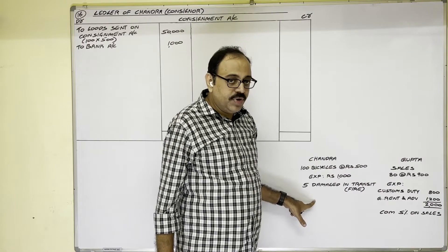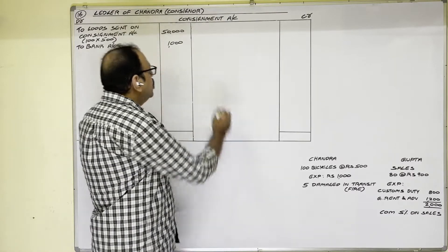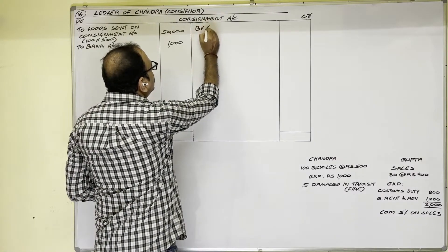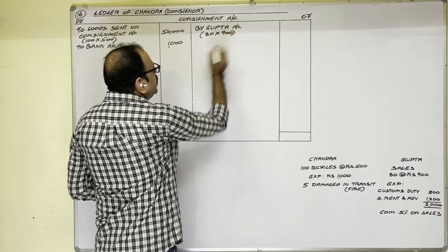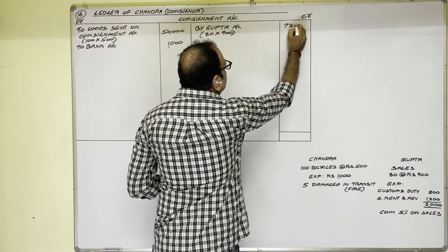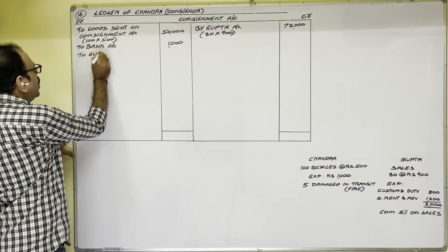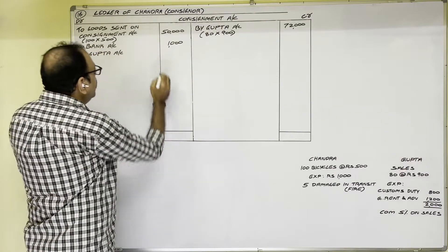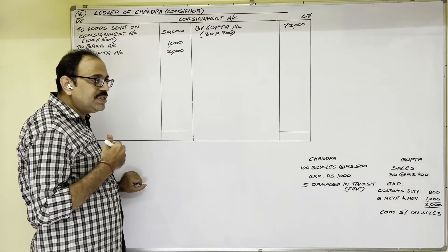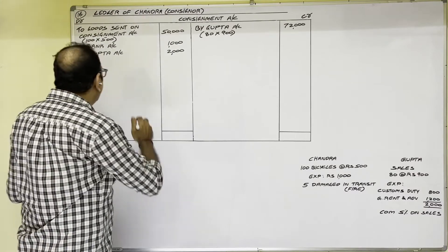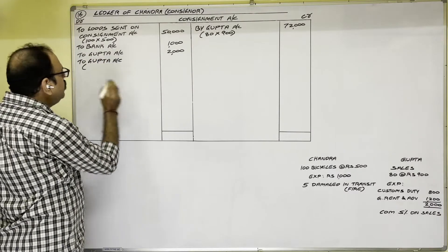For sales: income goes on the credit side. Goods are sold by Gupta, so we write: By Gupta Account — 80 bicycles × 900 rupees = 72,000 rupees. For consignee's expenses on the debit side: To Gupta Account — 800 + 1200 = 2000 rupees. For commission, which is an expenditure in consignment business: To Gupta Account — 72,000 × 5% = 3600 rupees.